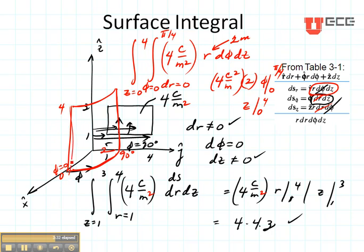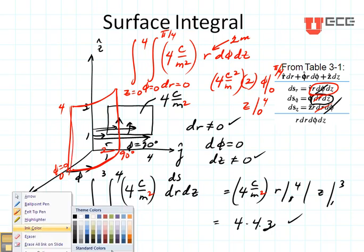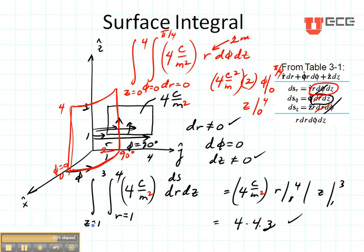So notice that what I did in all the cases, the first thing that I did was I defined my function and I decided what was changing. And I used that to define the ds term that I used. I decided if it was vector or scalar based on the function that I wanted to integrate. And then I just set up my integral using the ds term.